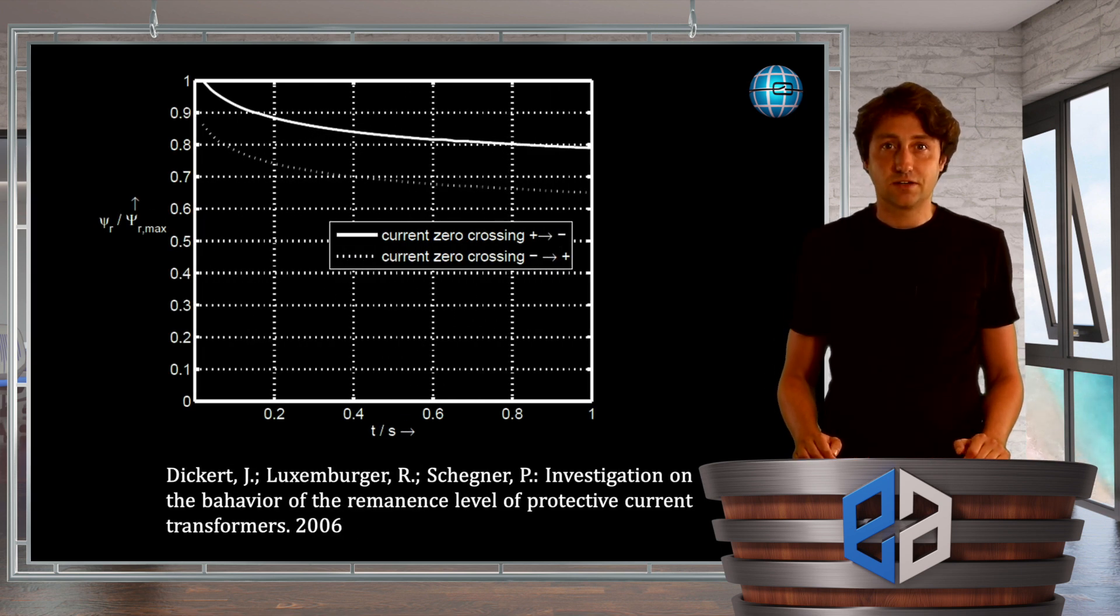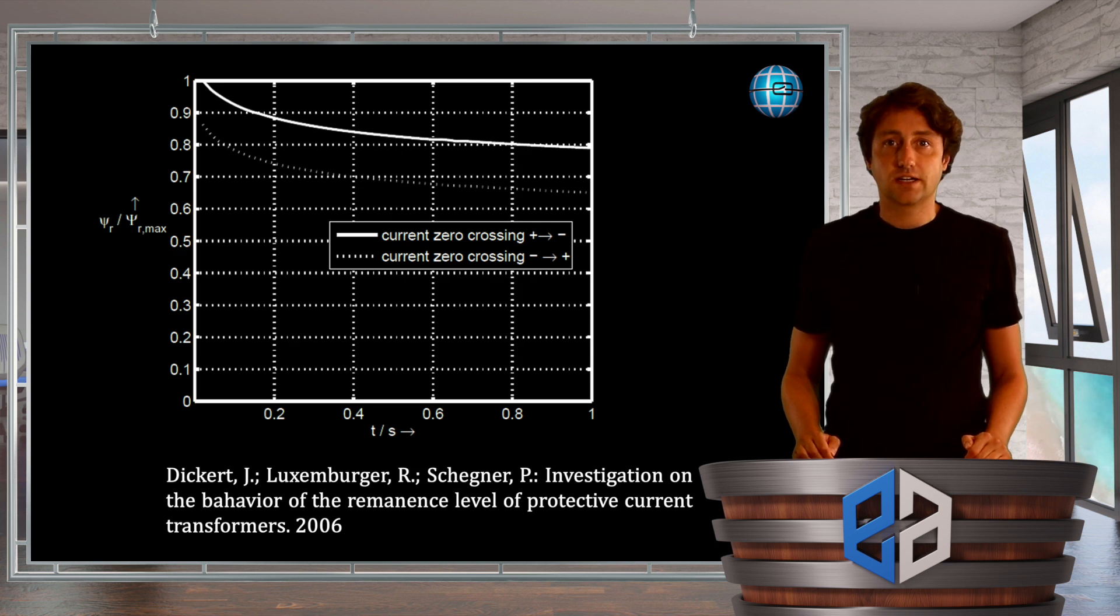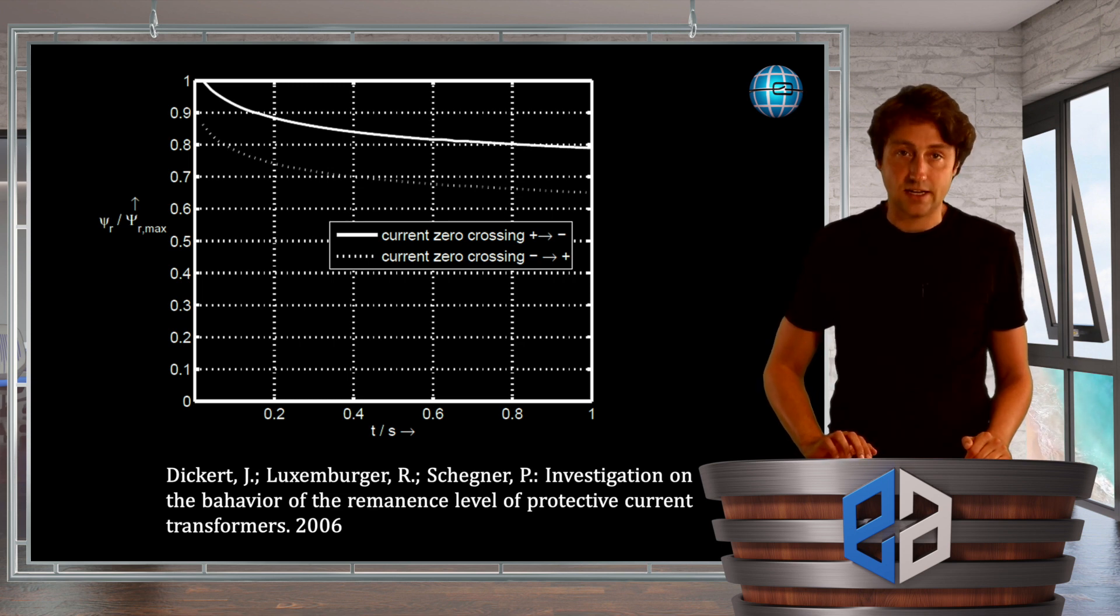And we asked ourselves the question does residual magnetism remain in the core or does it somehow disappear over time. And if we provoke residual magnetism in a core and measure if it disappears over time we see that it goes down somewhat but certainly not to zero, maybe down to half. So it stays there.